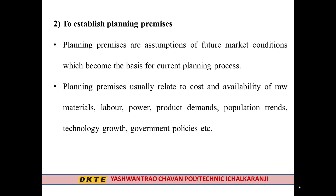The second step is to establish planning premises. Planning premises are assumptions about future market conditions which become the basis for the current planning process. For example, if we want to introduce a new product, we need raw material, and we should consider the cost of raw material in present and future scenarios. Planning premises are usually related to the cost and availability of raw material, labor, power, product demand, population trends, technology growth, and government policies.